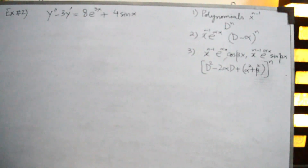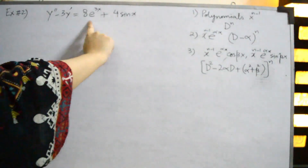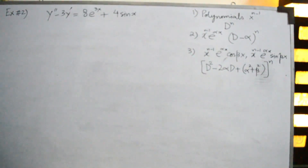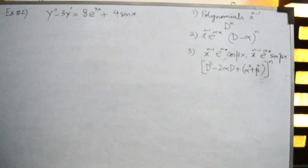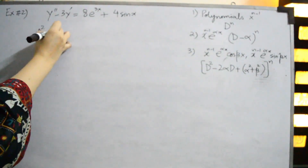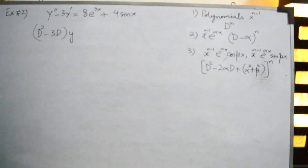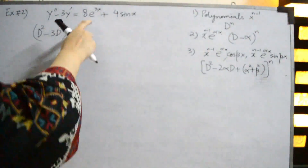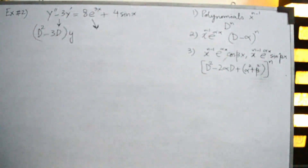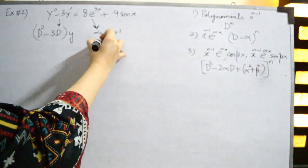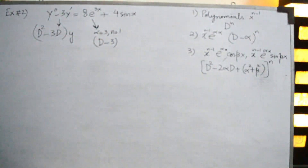Example two: y'' - 3y' = 8e^(3x) + 4sin(x). The non-homogeneous side has two different types of functions requiring different annihilator operators. The term 8e^(3x) falls under the second formula with alpha = 3 and n = 1 (since there is no x factor), giving annihilator operator (d - 3)¹. The term 4sin(x) falls under the third formula.